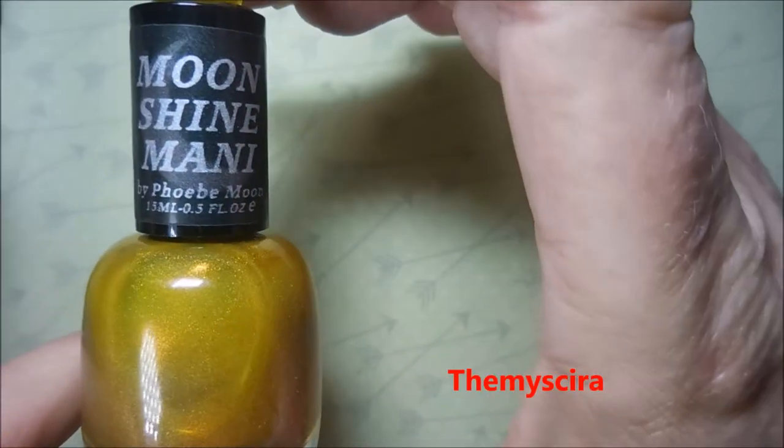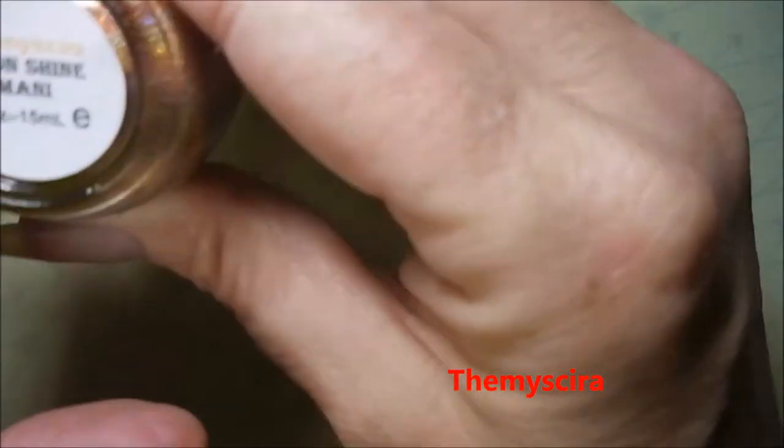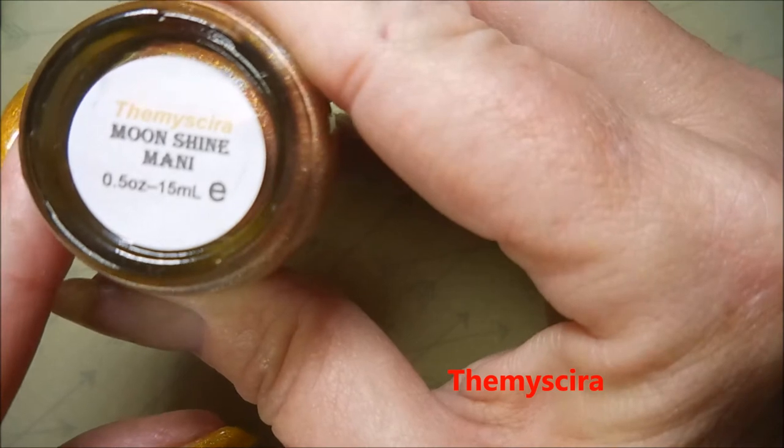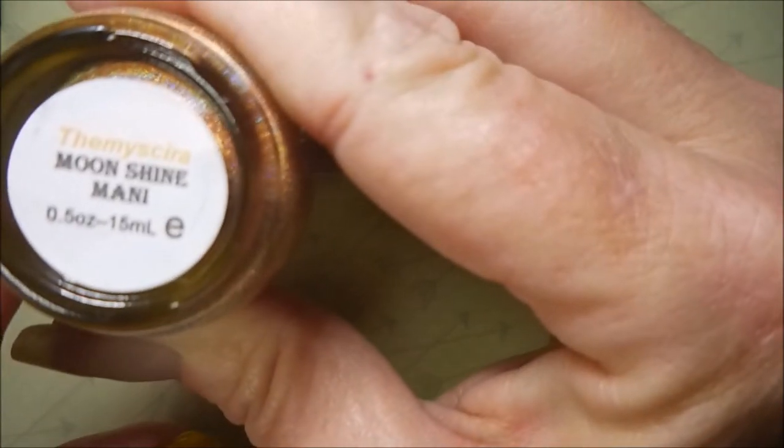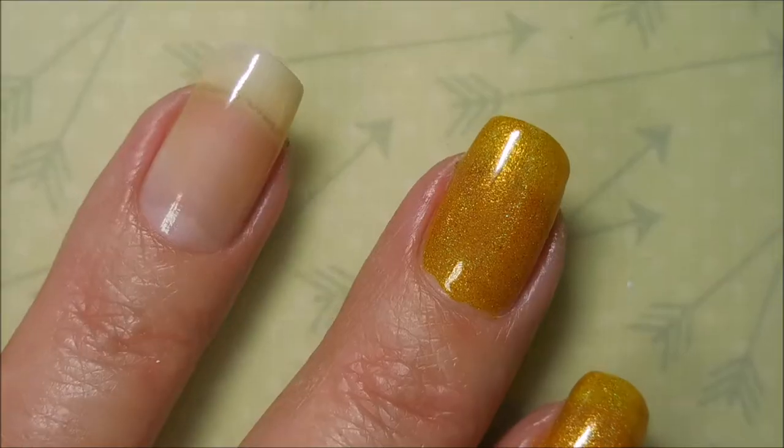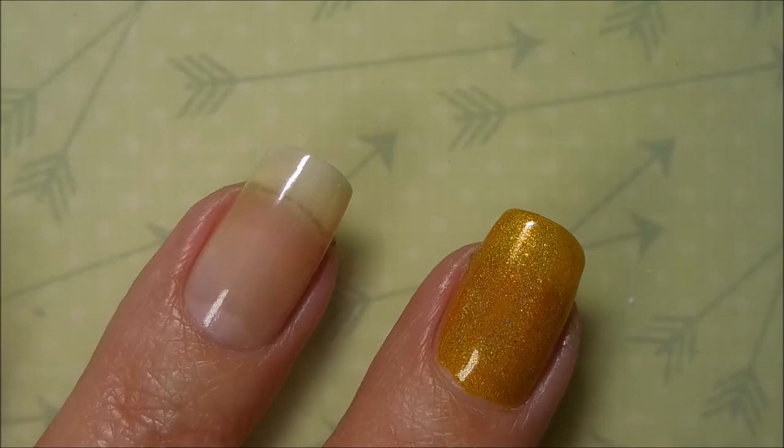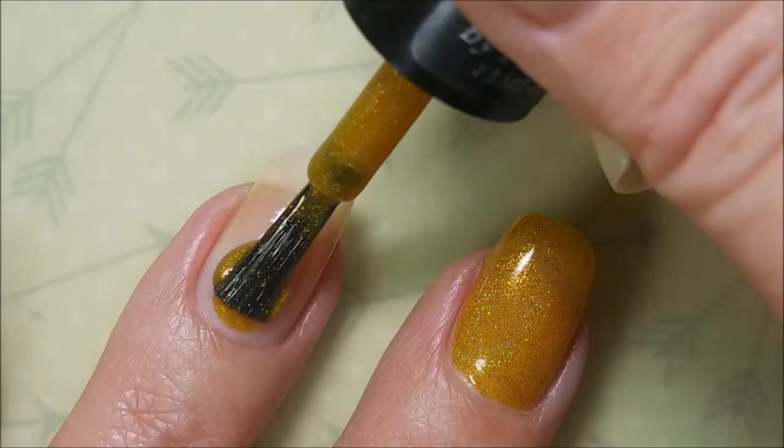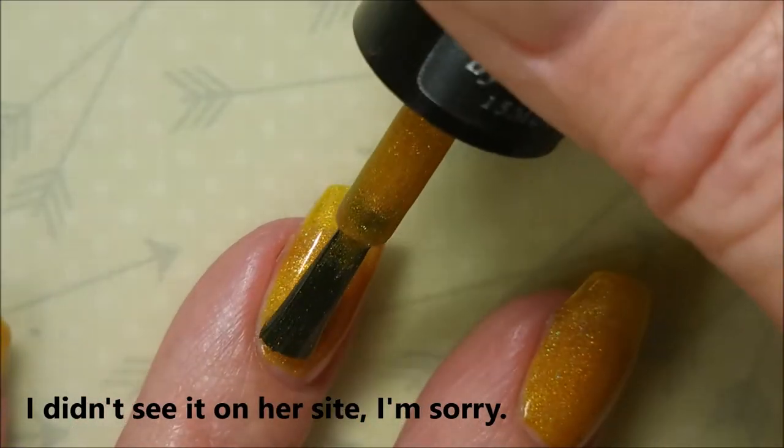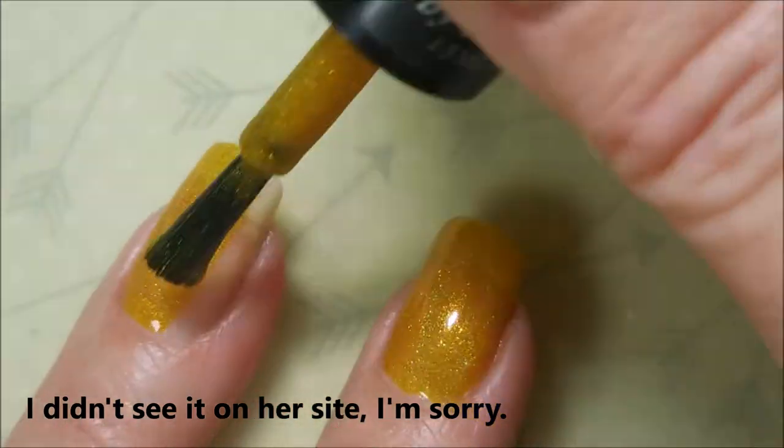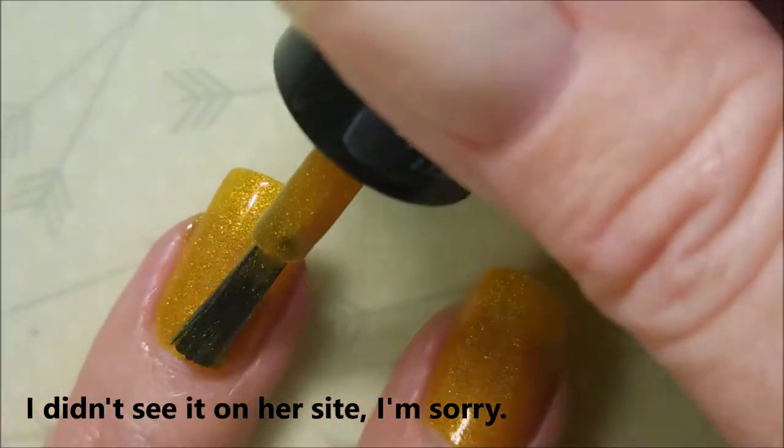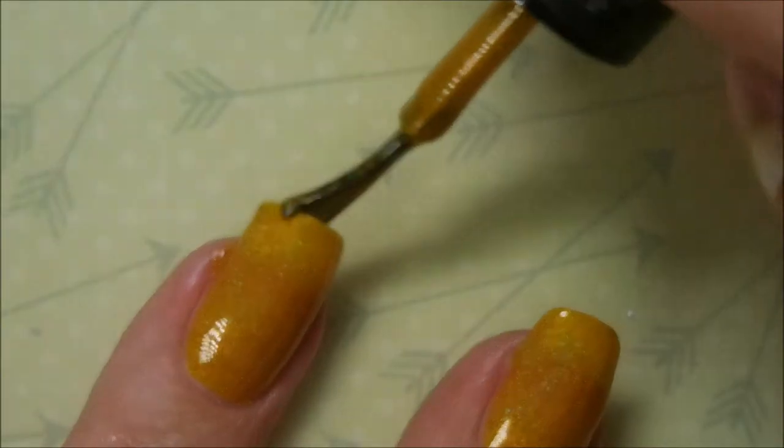And here we go with the beautiful Moonshine Manny, their Messera. And this one is in one of her old bottles, but I think it's still one that she might be carrying. I'll have to check and leave information down below. But I wanted to make sure that I wore this one because I bought the set and I think this was the only one I hadn't worn.